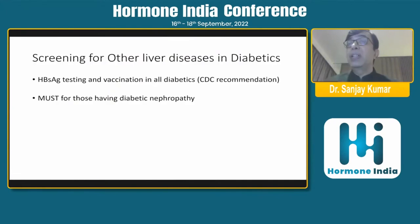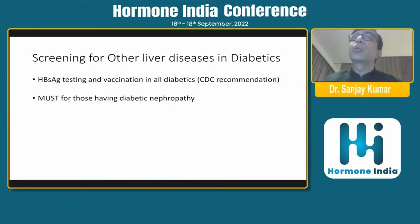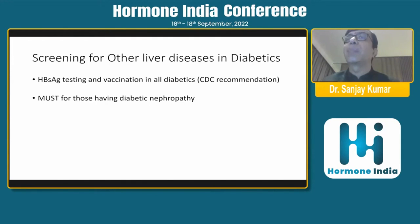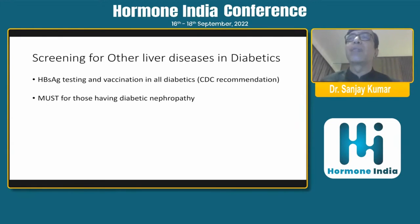You should also screen for other liver diseases. All diabetics should get their hepatitis B surface antigen tested and be vaccinated if negative — this is a CDC recommendation. It is especially important for diabetics who may undergo dialysis and face additional risk of acquiring hepatitis B and C. While there is no vaccine for hepatitis C, at least hepatitis B vaccination should be ensured.